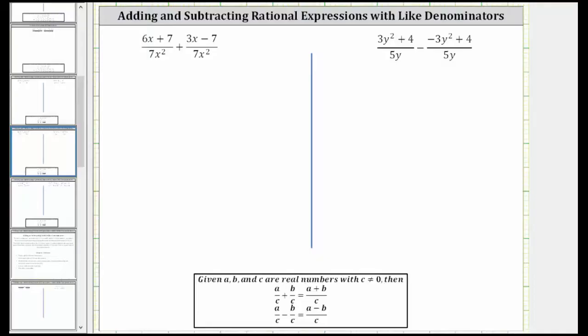We are asked to add or subtract the rational expressions. In order to add or subtract rational expressions, we must have a common denominator or like denominators. Notice for both of these examples, we do have like denominators. In order to add or subtract rational expressions with like denominators, the denominator remains the same, and we add or subtract the numerators.